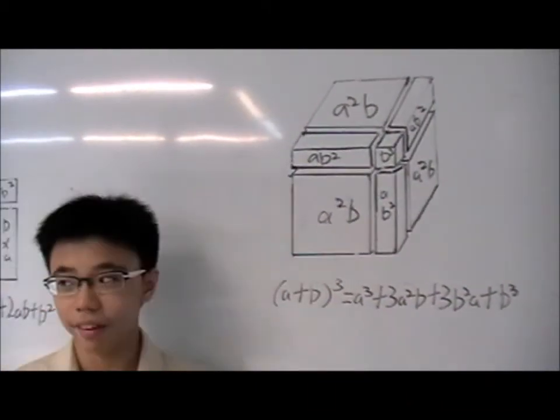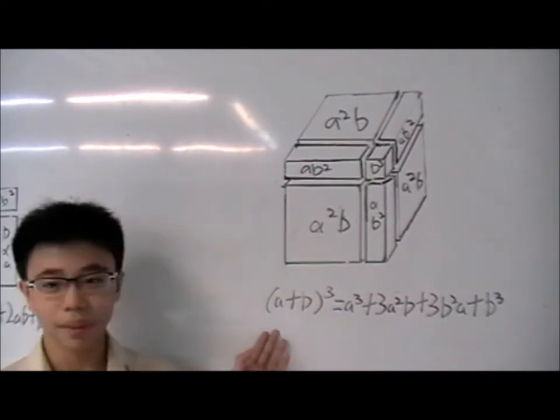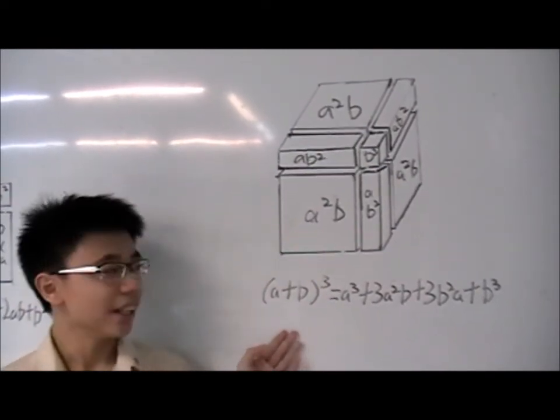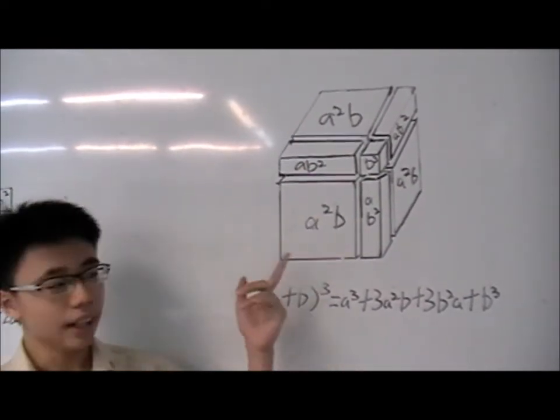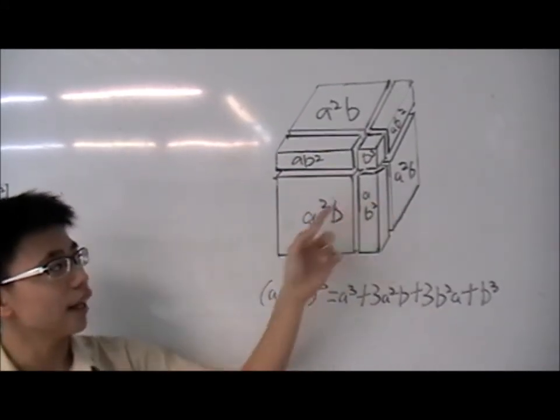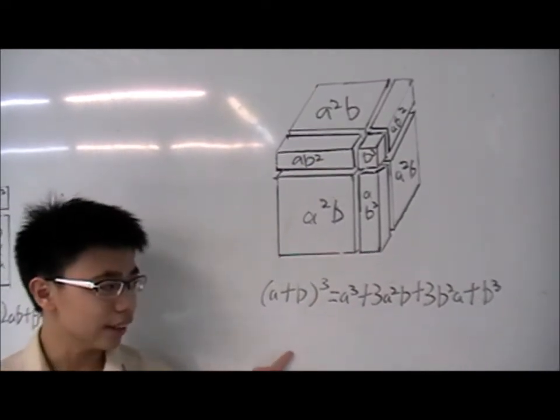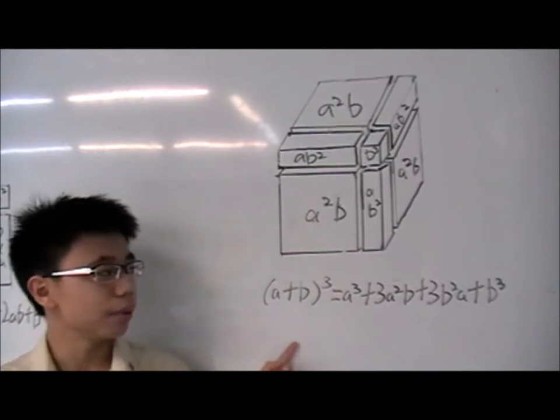Okay, for the last bit, I will demonstrate how all the pieces from the previous sets form the binomial expansion of A plus B cube. So, as you can see, there's the A square B and the AB square. Each of them appears three times in the binomial expansion, in concurrence with Pascal's triangle of 1, 3, 3, 1.